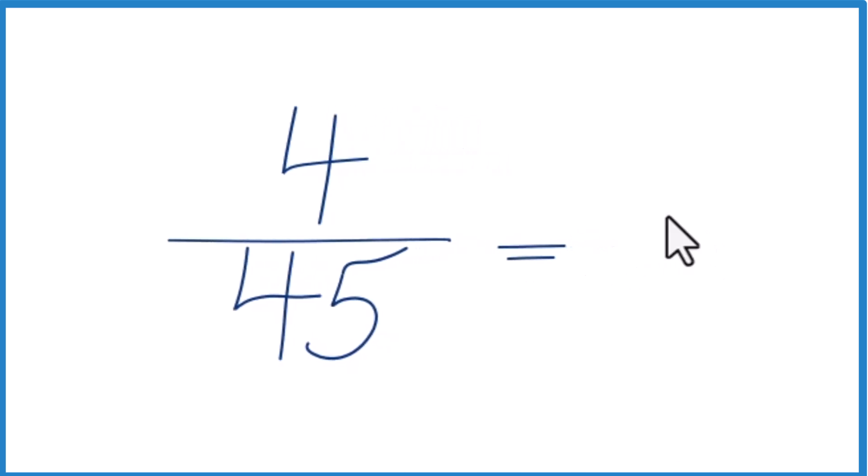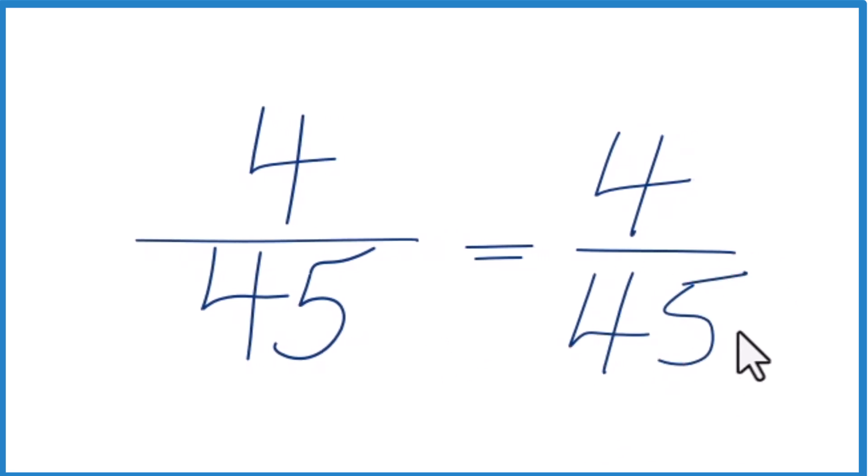So if we divide 4 by 1, we get 4. If we divide 45 by 1, we get 45. So 1 is our greatest common factor. And you can see that we get the same thing here that we started with.